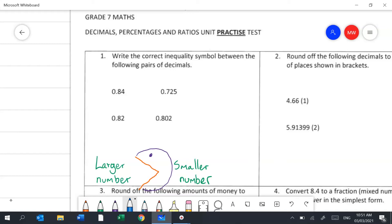If we have a look at them up in our questions here, I've got 0.84 and 0.725. Looking at the first number, they've both got a 0 but after the decimal the first number is 8 and the first number is 7, so the number on the left will be bigger so we put our inequality symbol in this way. Have a look at the second example: we've got a 0 and a 0, a decimal and a decimal, an 8 and an 8, a 2 and a 0. The one on the left is bigger again so the inequality symbol will go in the same direction.